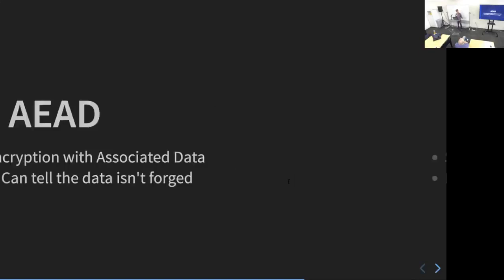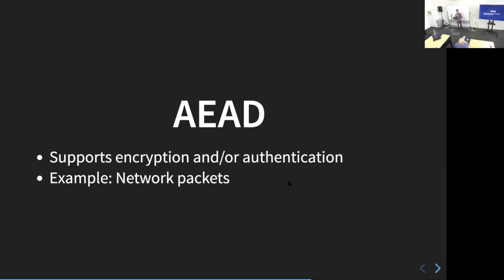AEAD supports encryption and/or authentication and has two parts. There's a plain text header part that's always in plain text — you're just doing authentication on it, so it only gives you the ability to check if it's been altered. It also has a part that's actually encrypted. You can use either or both. An example where you need both is encrypting network packets — the header is in plain text but you still want to check it hasn't been changed maliciously, and the body is actually encrypted.